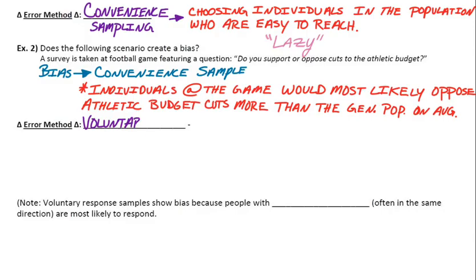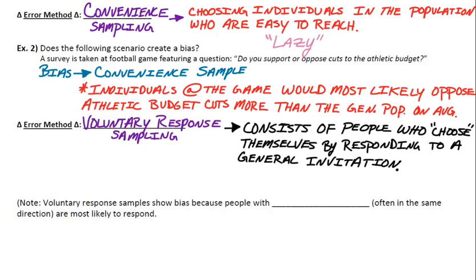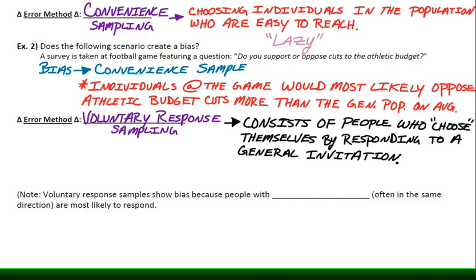The second error method is voluntary response sampling. The definition of voluntary response sampling, and this is an error method, is a sample that consists of people who choose themselves by openly responding to some general invitation. For example, most social media polls would be subject to voluntary response sampling. People can choose whether or not they'd like to be included in the survey.